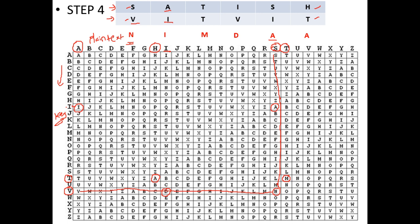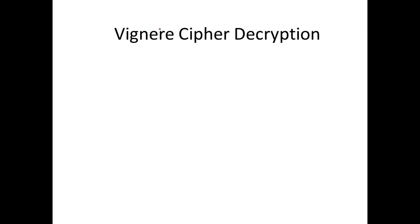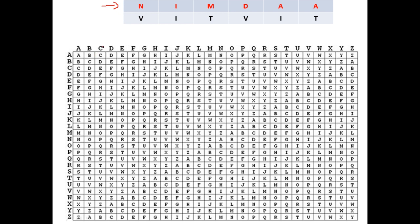I hope you are all clear with how encryption happens in Vigenère cipher. Now let's go to decryption. For decryption we first take our encrypted text — N I M D A A — received from the previous step. We take the key VIT and expand it to match the length of the ciphertext. The columns in the table represent plaintext, the left side represents key values, and the interior values are ciphertext.